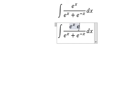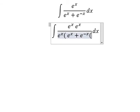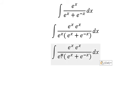We need to multiply by e to the power of x on numerator and denominator, so this one will go to this one and this one.